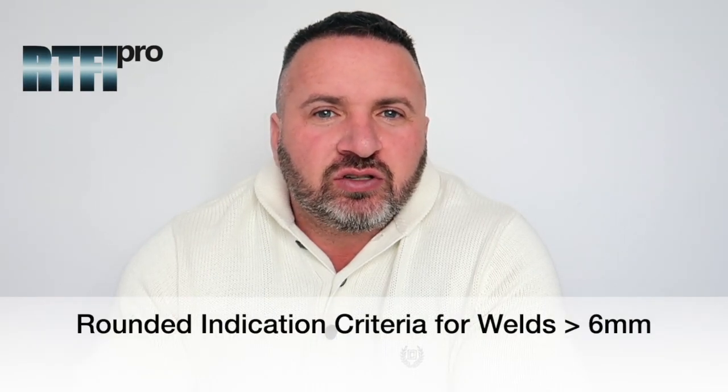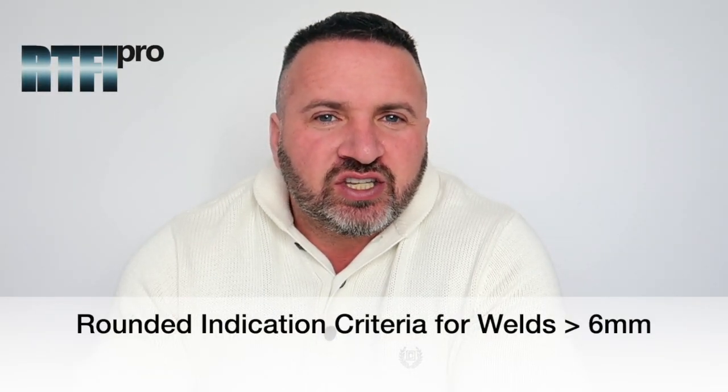Today's topic that we will be discussing is ASME B31.3 Normal and Category M Fluid Service for rounded indication criteria for welds greater than 6 millimeters.